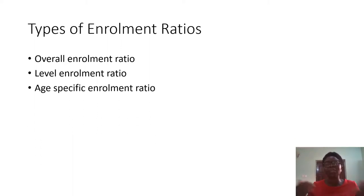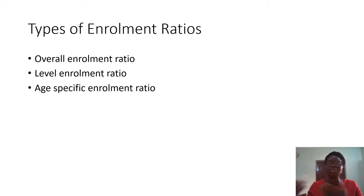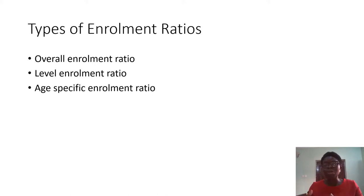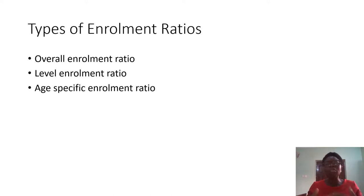We also have the age-specific enrollment ratio, which deals with a particular age group that are enrolled in school. For example, we may want to find out the age group between 12 to 17 that are enrolled in school, irrespective of the classes, because some of this age group will be in a level that they ought not to be — they are in school, but not at the right level.